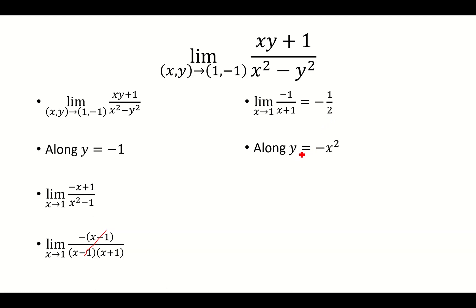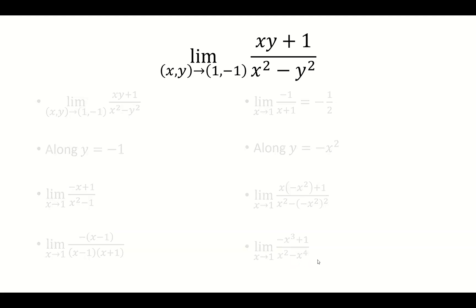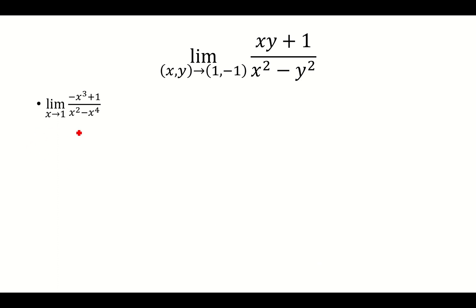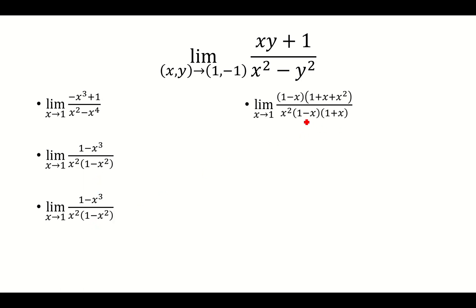Now I'm going to look at the path y = -x². Substitute that in. I have (-x³ + 1) over (x² - x⁴). From here I can factor the denominator: I have an x², so I have (1 - x²) left. The (1 - x²) factors further into (1 - x)(1 + x). And then the (1 - x³) gets factored into (1 - x)(1 + x + x²). The (1 - x)'s cancel, and I'm left with (1 + x + x²) over x²(1 + x). Now I can plug in x = 1 and get 3/2 as my limit.